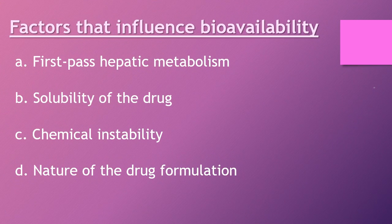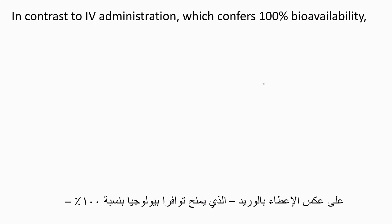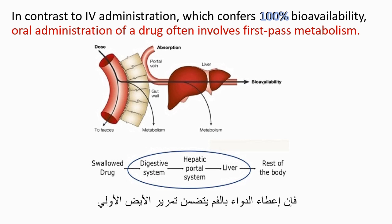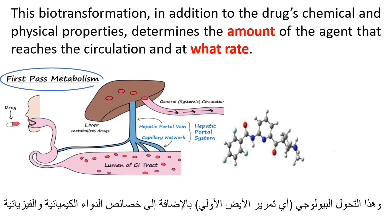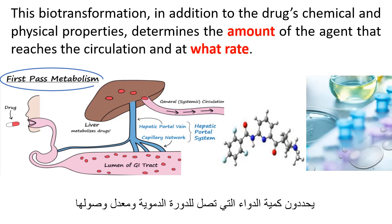Factors that influence bioavailability: In contrast to IV administration, which confers 100% bioavailability, oral administration of a drug often involves first-pass metabolism. This biotransformation — first-pass metabolism — in addition to the drug's chemical and physical properties, determines the amount of the agent that reaches the circulation and at what rate.